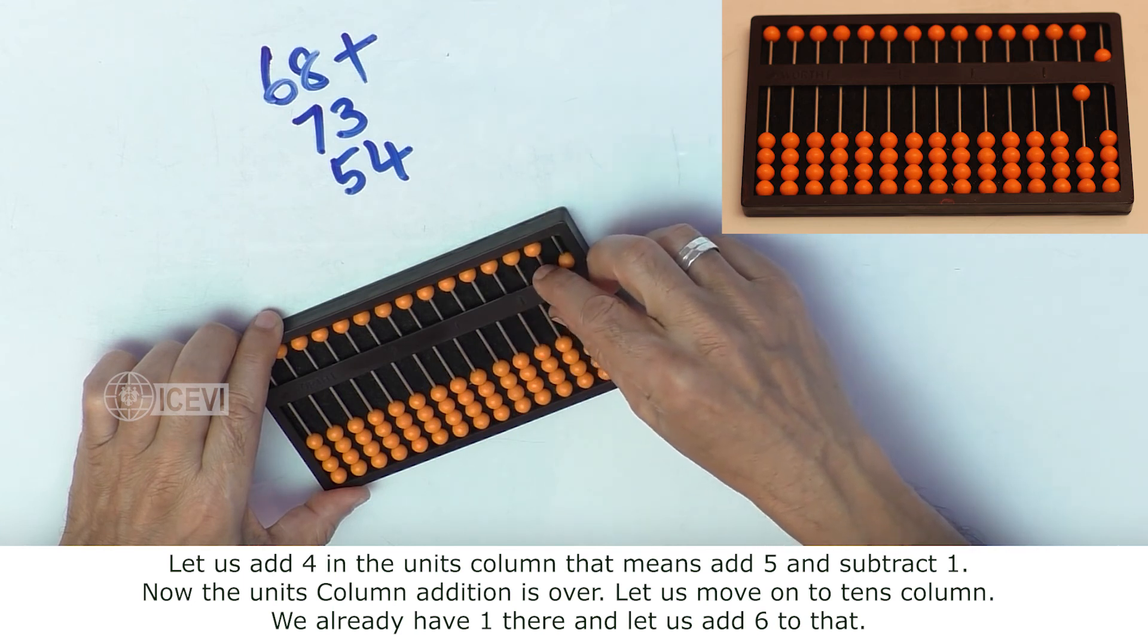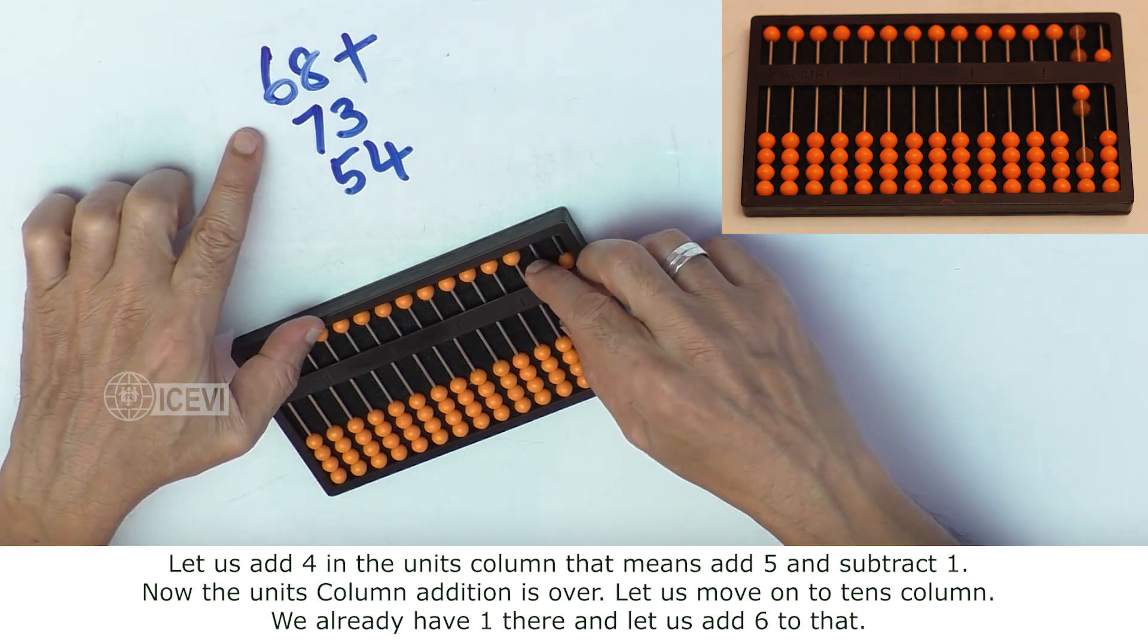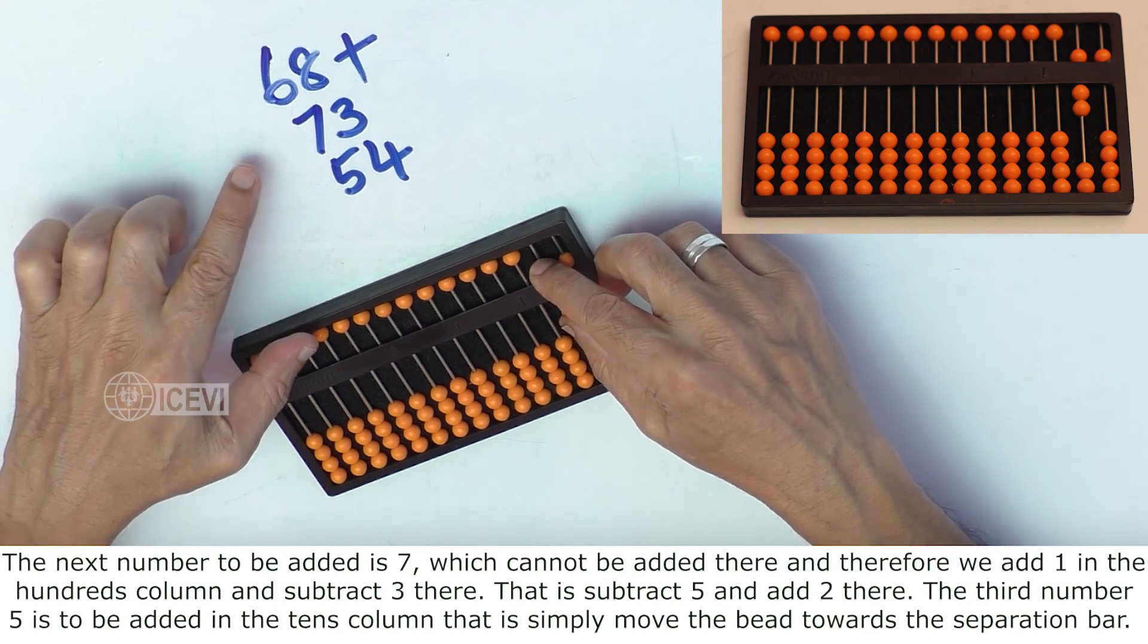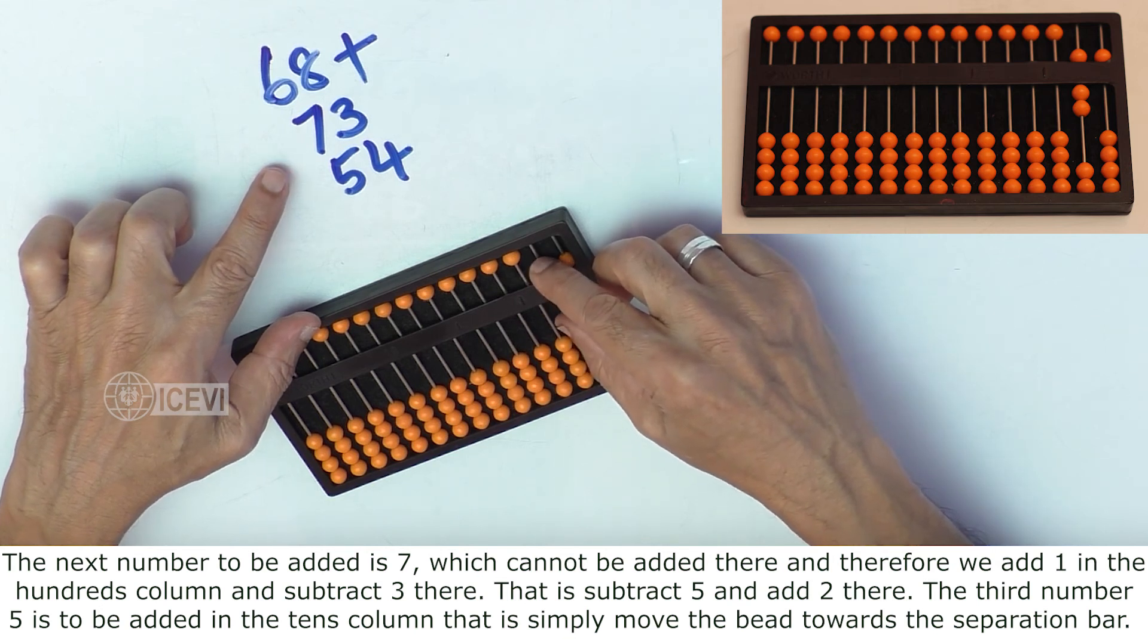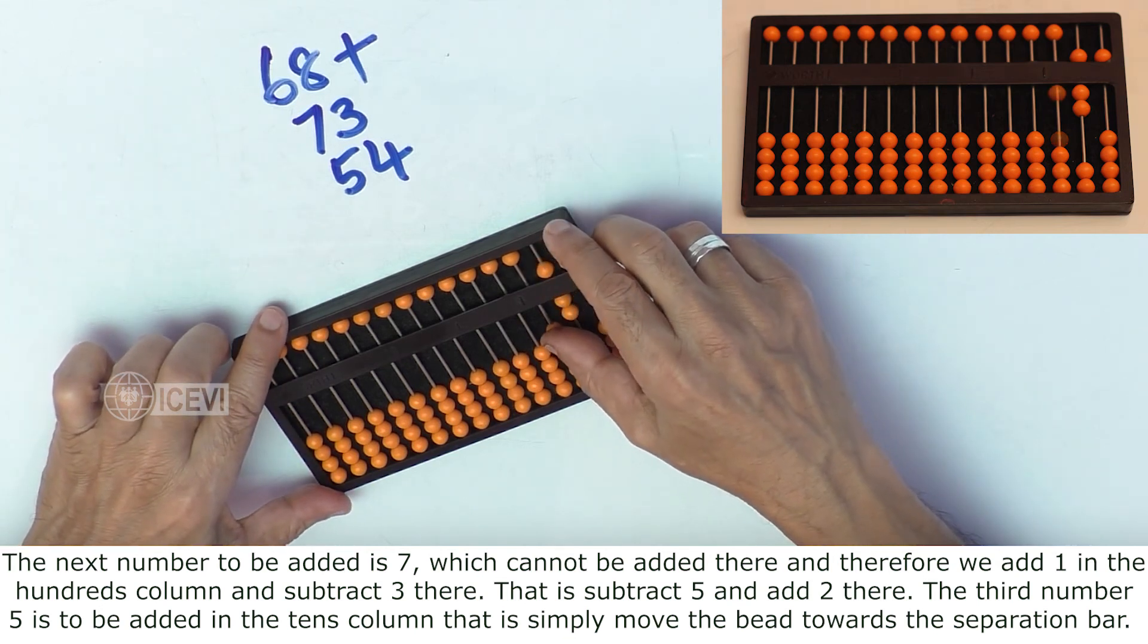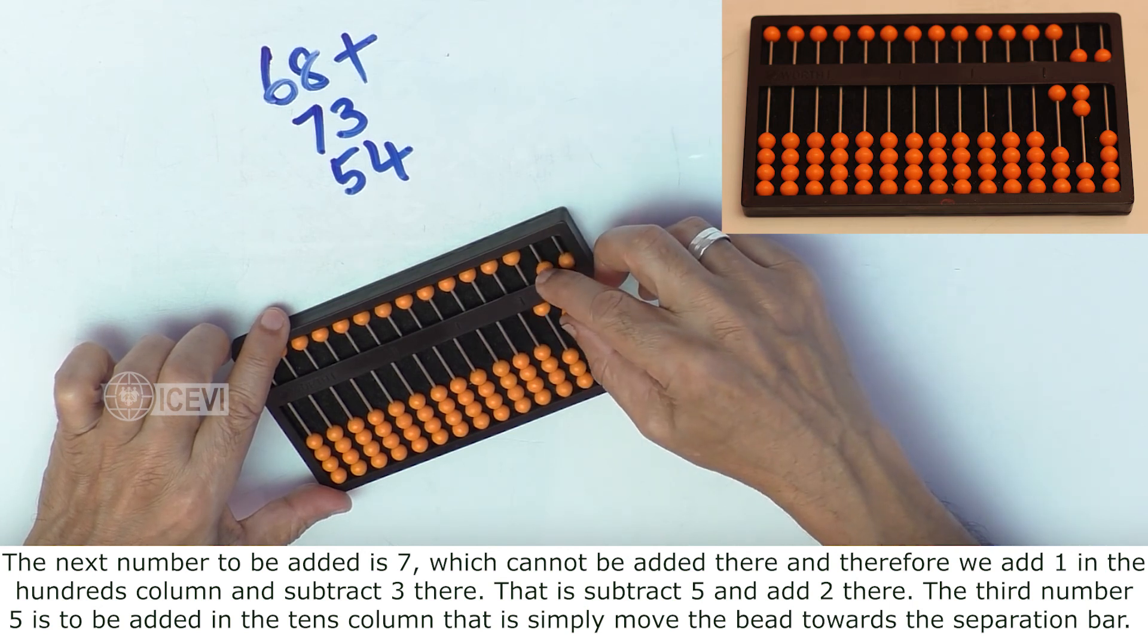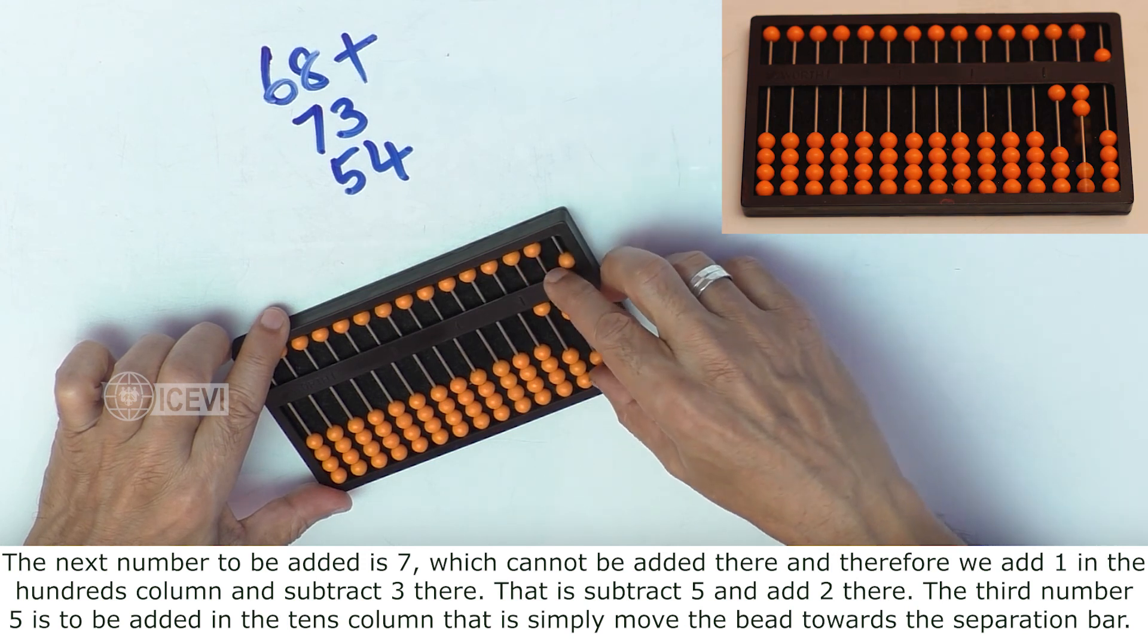We already have 1 there, and let us add 6. Now with this 6, the next number 7 should be added, which cannot be added there. Therefore, we add 1 in the hundreds column and subtract 3. That is, subtract 5 and add 2 there.